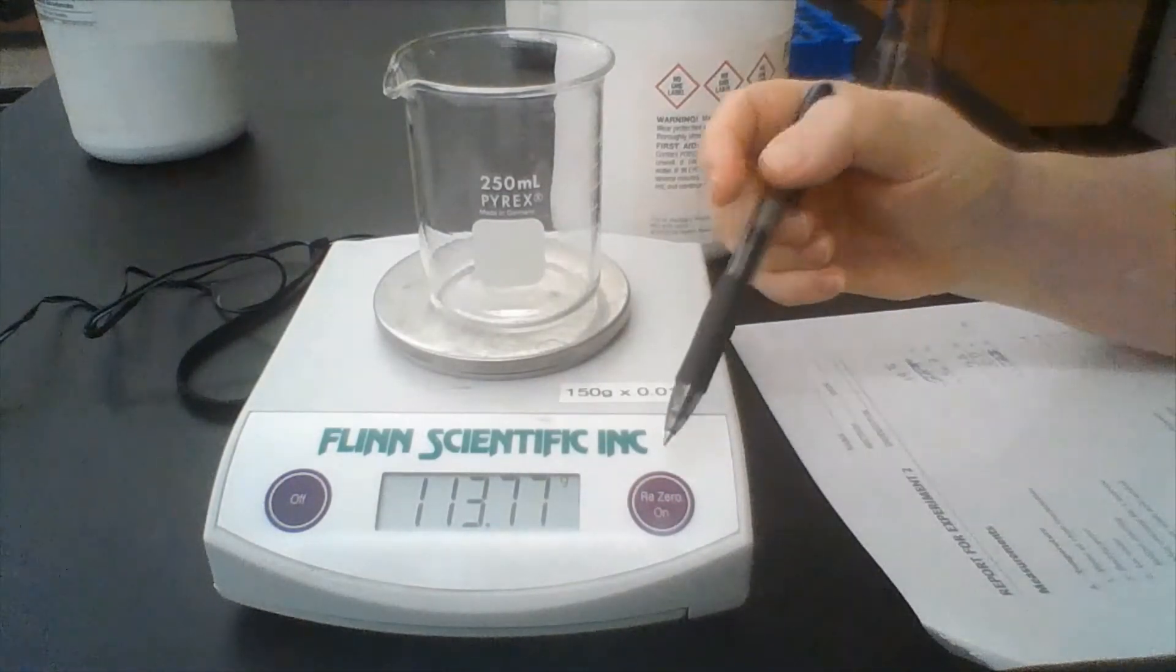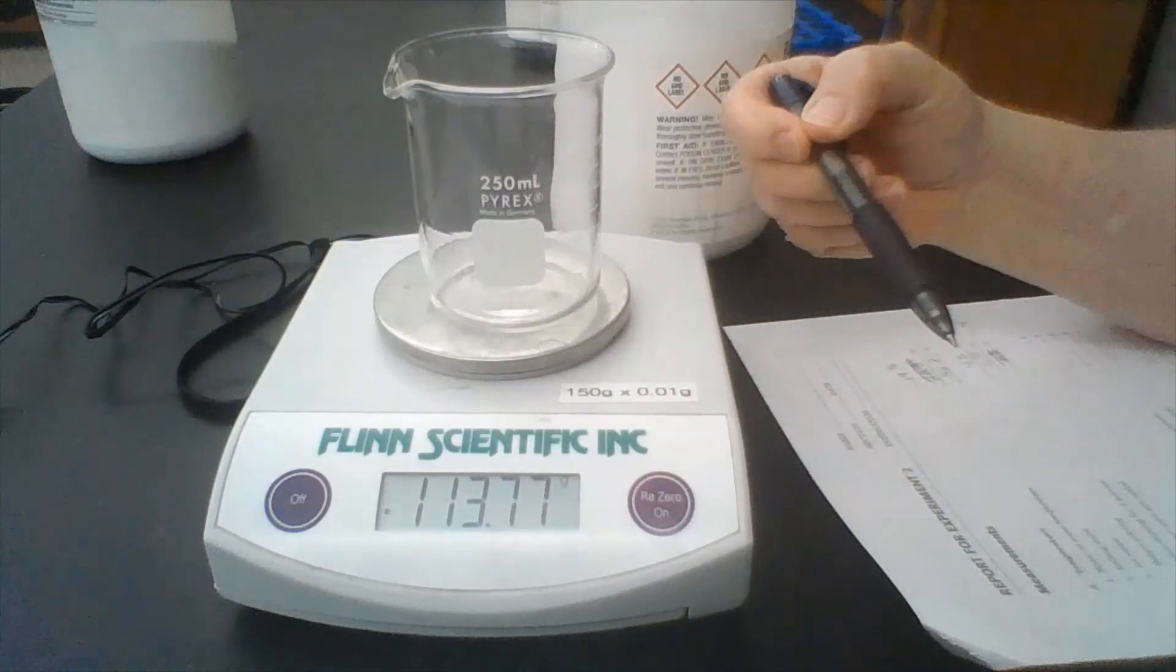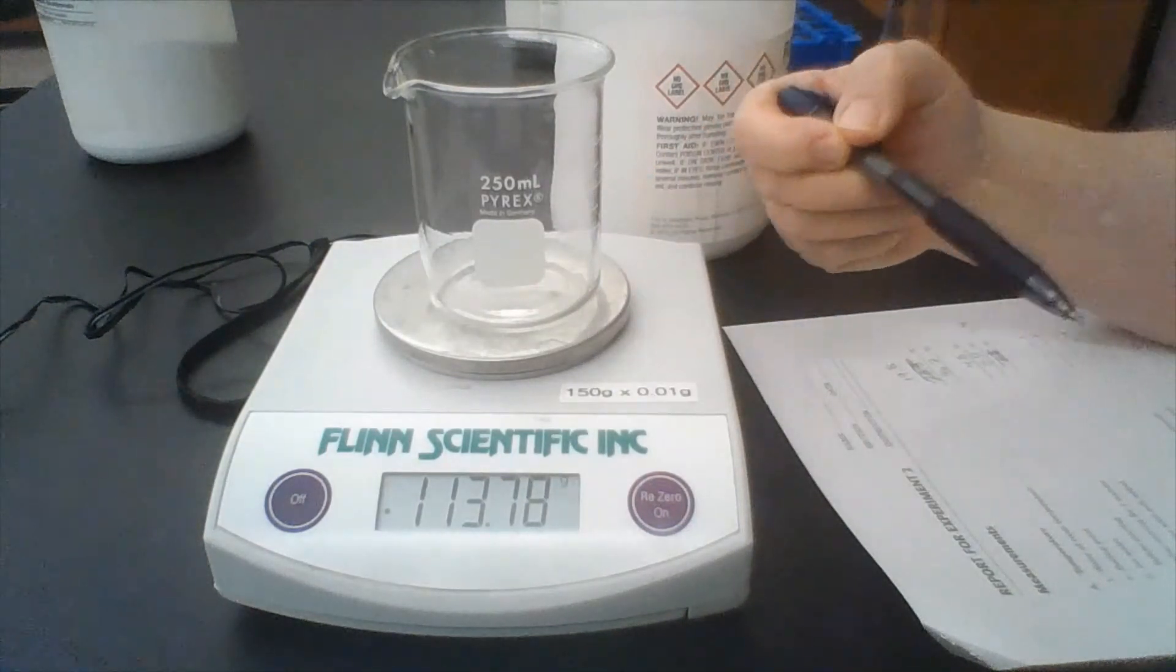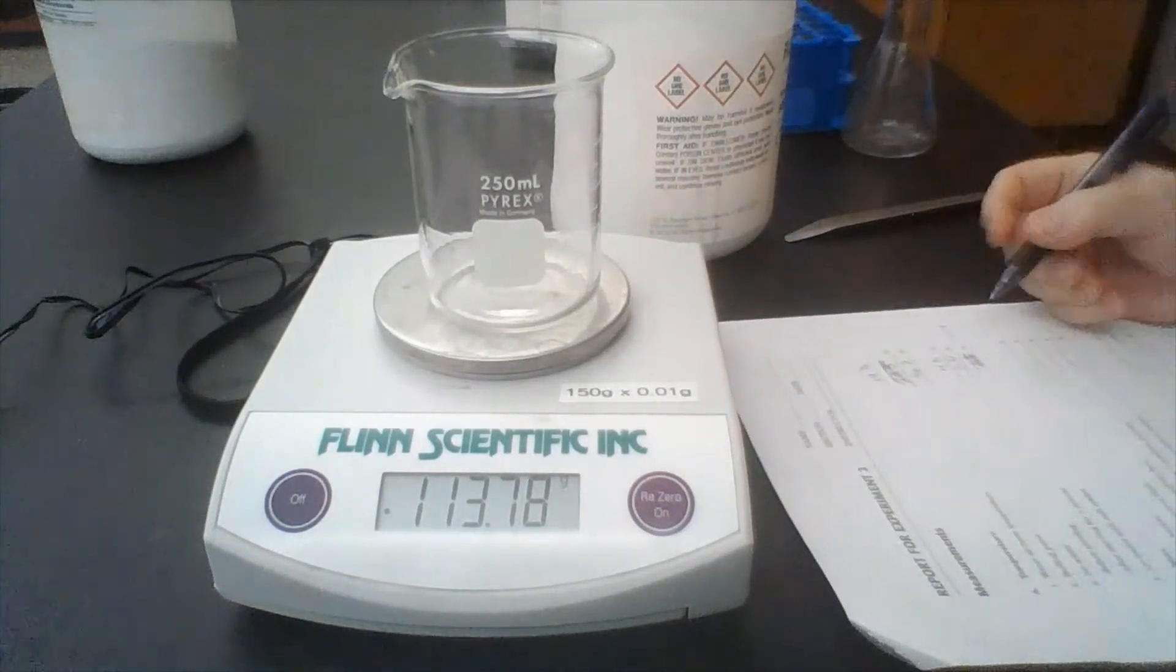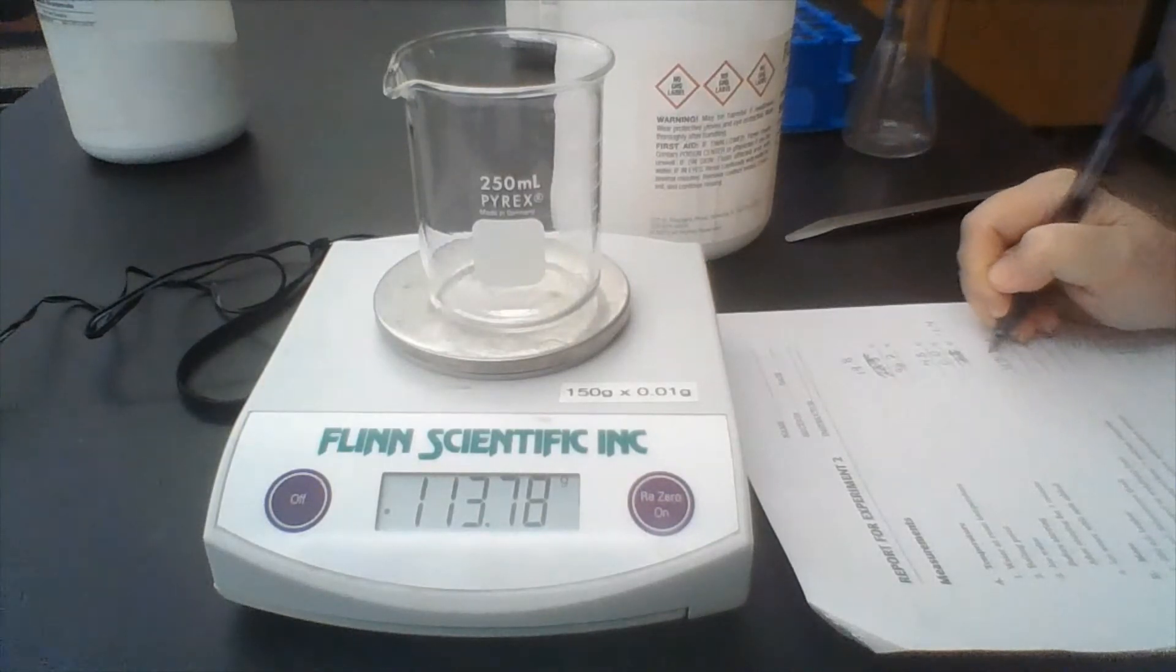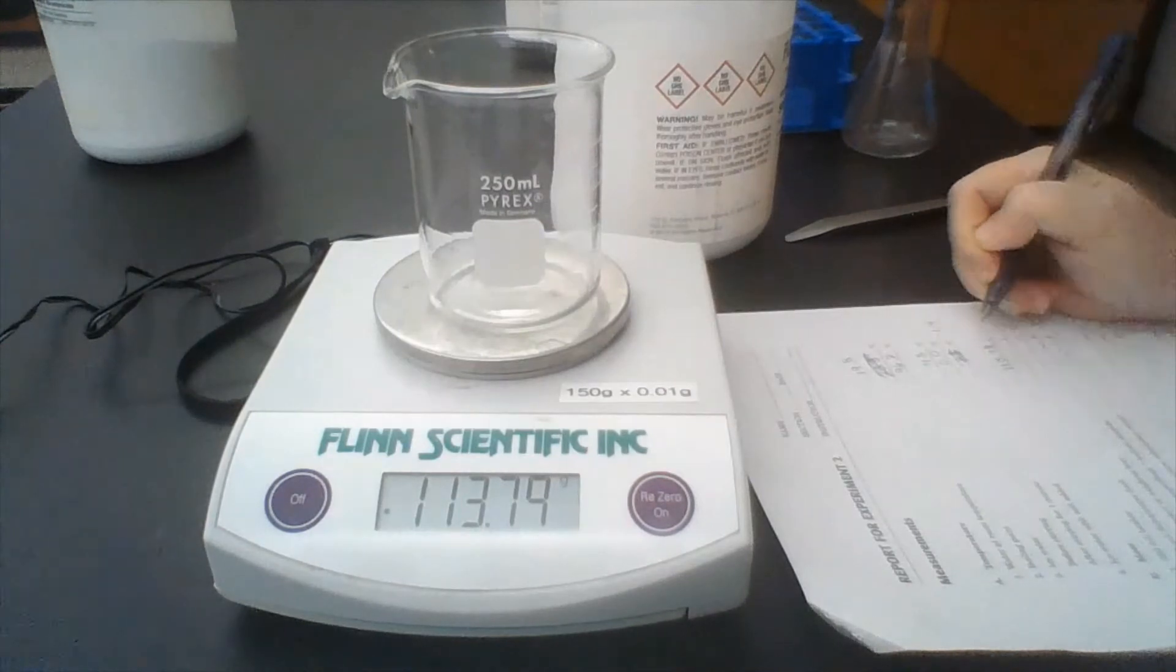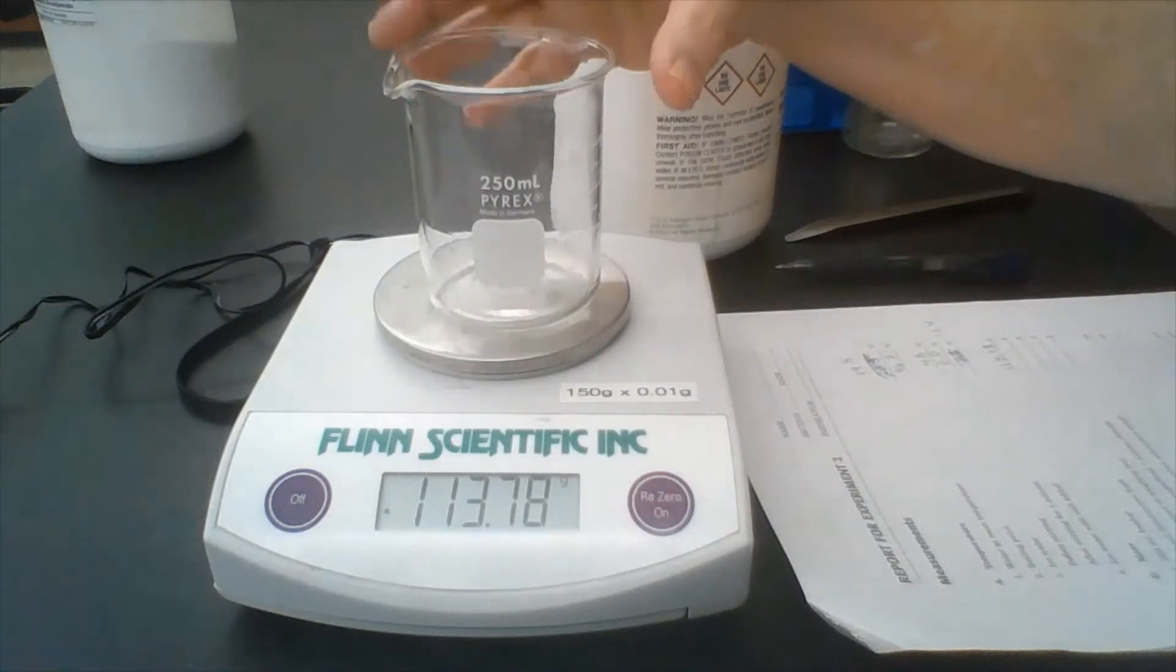So the scale is zeroed, and now I'm going to measure a 250 milliliter beaker. As you can see, this last digit changes, and that's going to be our uncertain digit, but that's okay, it's okay to have one uncertain digit. But I will write down all the digits. That's 113.7879 grams. That's our 250 milliliter beaker.